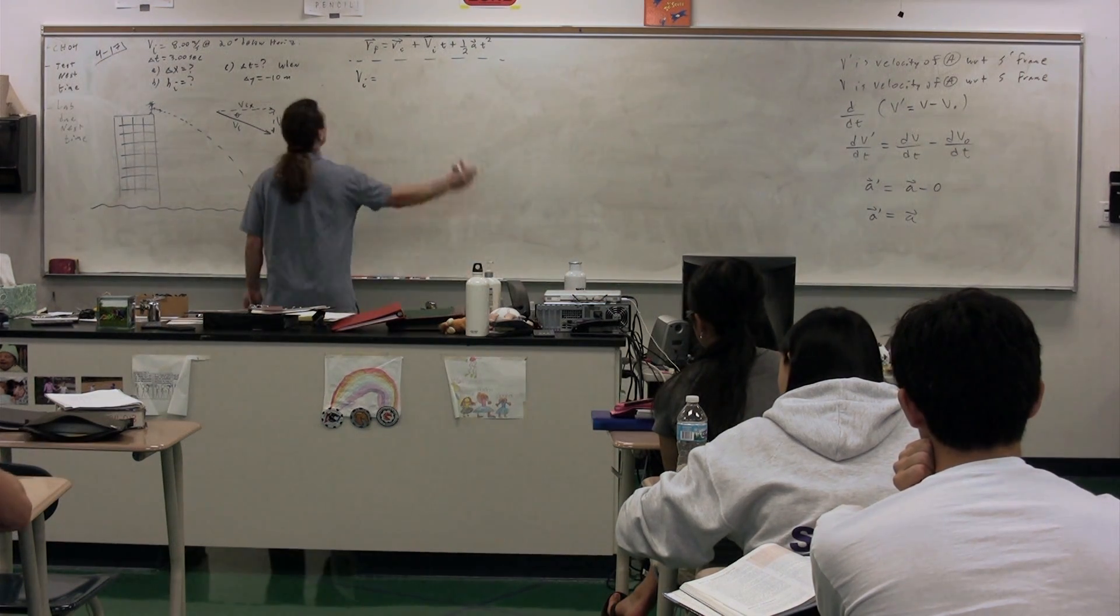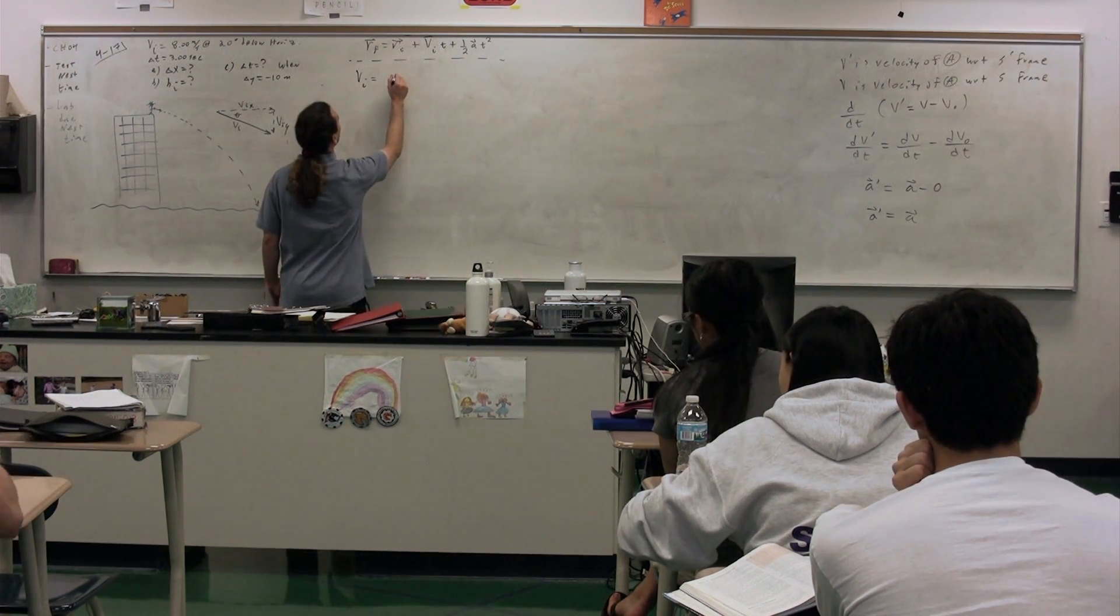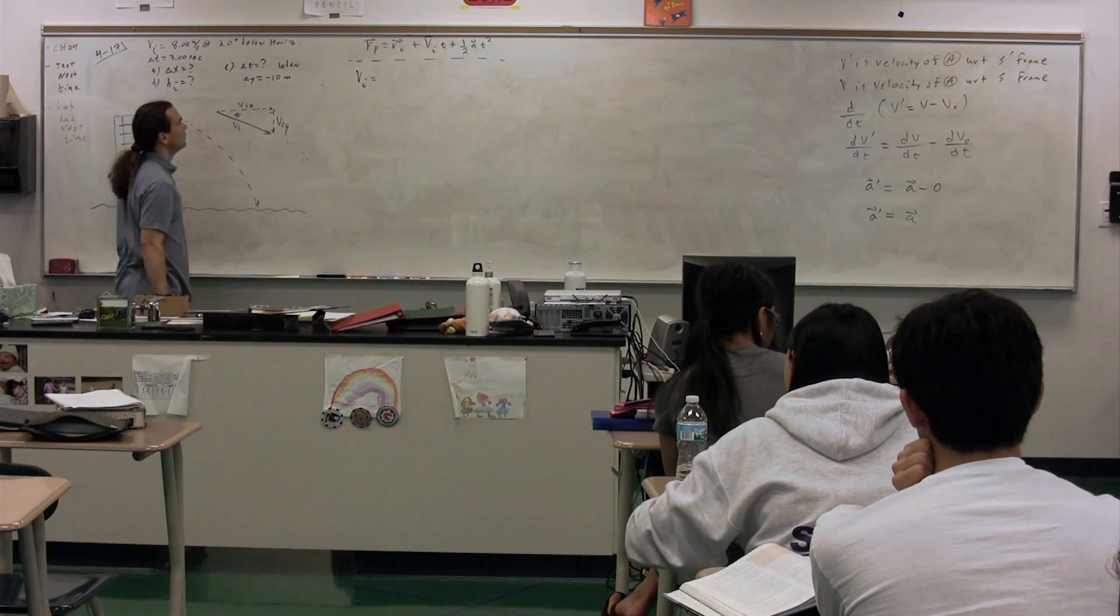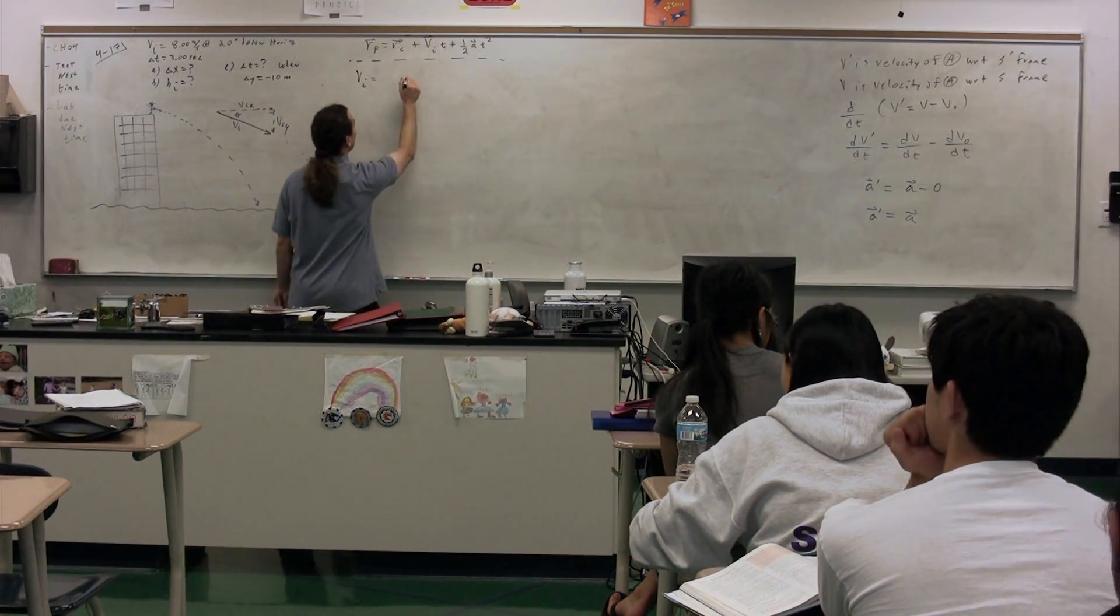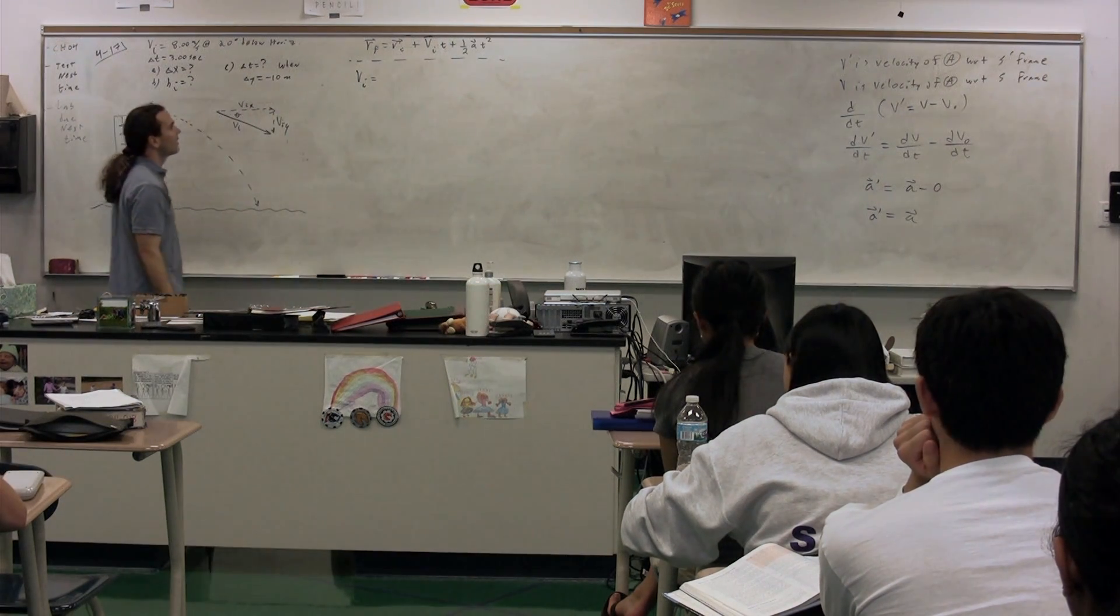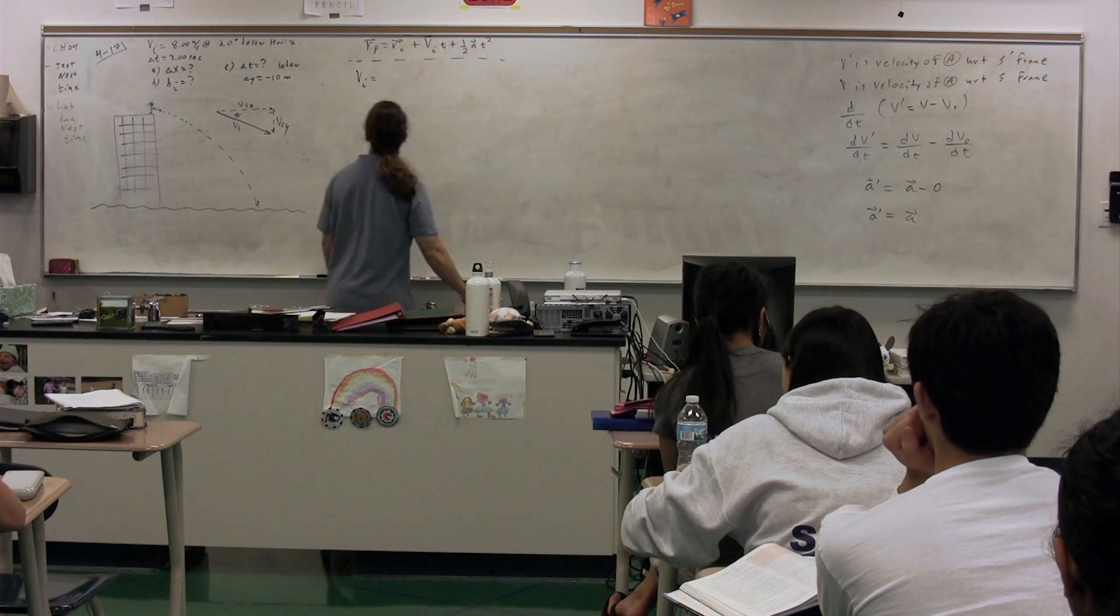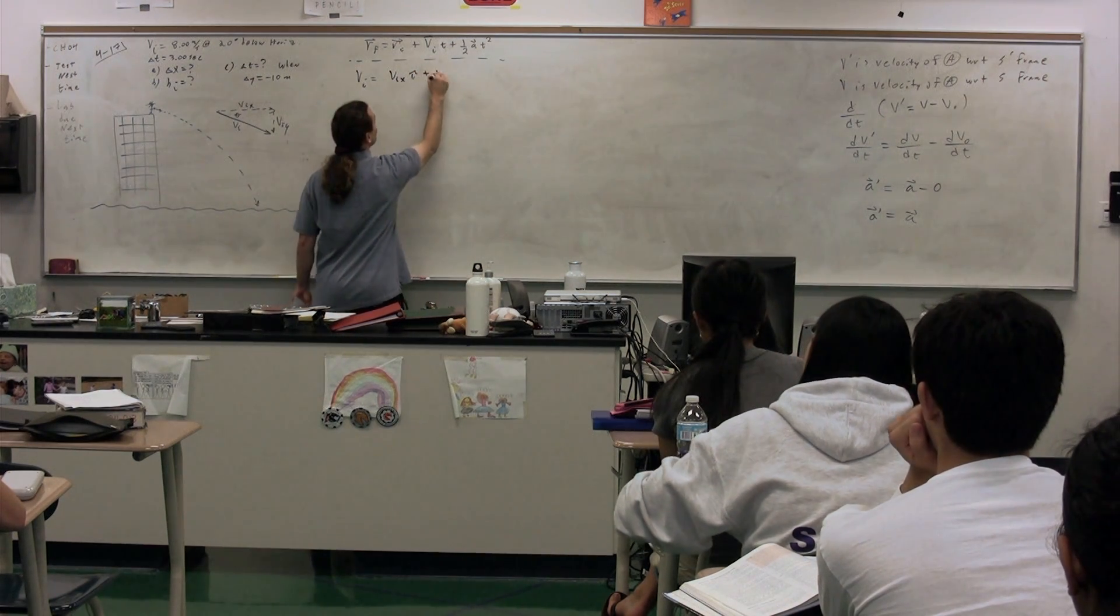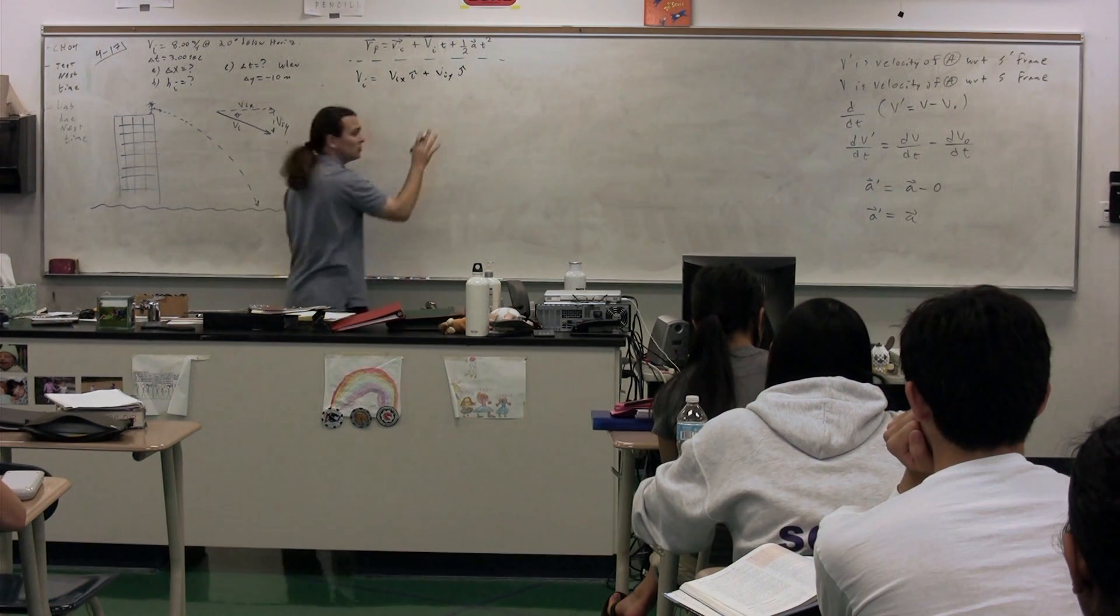Well, we know that theta is equal to 20 degrees using trig, so velocity initial in the x-direction equals velocity. Let me do this, velocity initial in the x-direction i plus velocity initial in the y-direction j. Let's just do that, right?